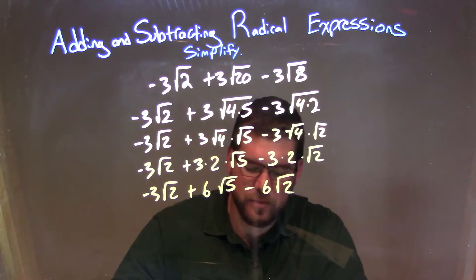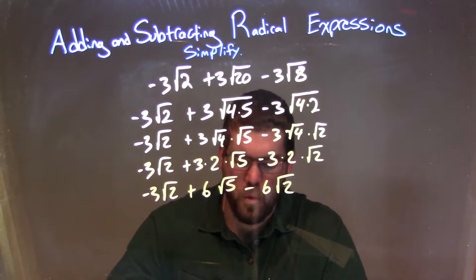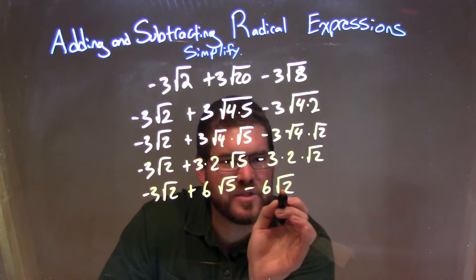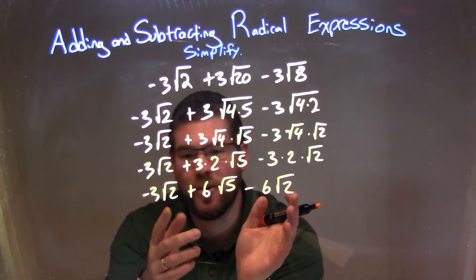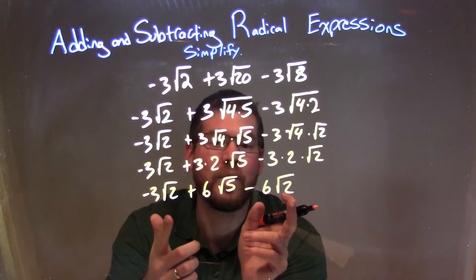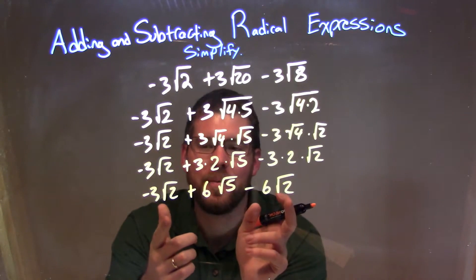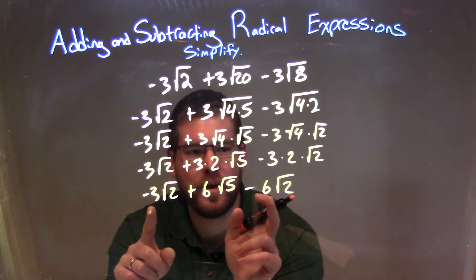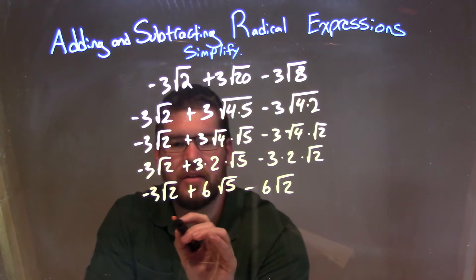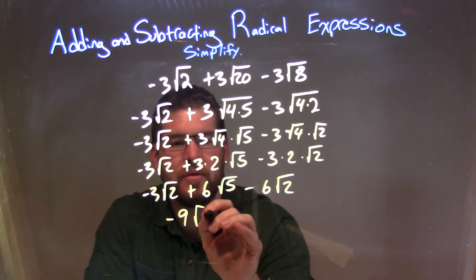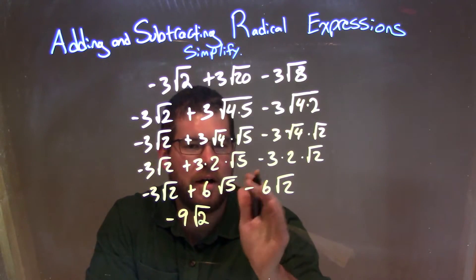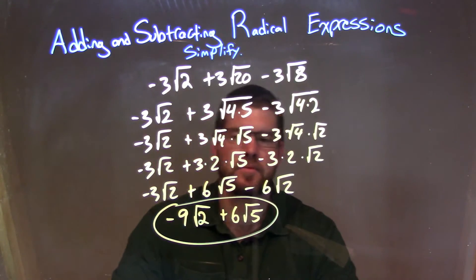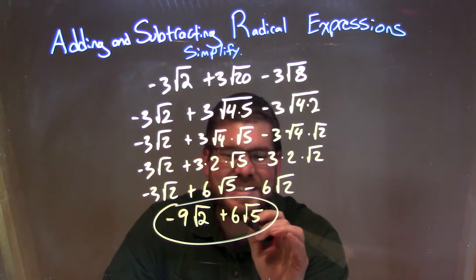So now we're going to combine our like terms. I have my negative 3 times the square root of 2 and then minus 6 square root of 2. These two share the same square root — they're not technically called like terms, but they have the same square root. So I combine those two together: negative 3 minus 6 is negative 9. So we have negative 9 times the square root of 2, and then the square root of 5 is all by itself, so we have plus 6 square root of 5. Our final answer is negative 9 times the square root of 2 plus 6 times the square root of 5.